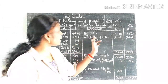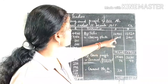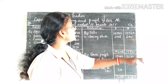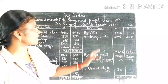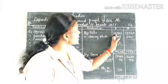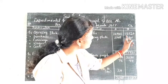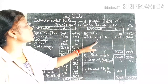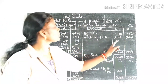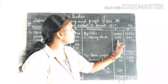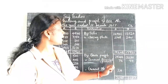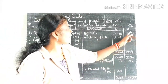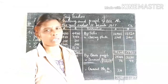On the credit side: Sales — Department A: 16,900 rupees, Department B: 13,520 rupees. Then closing stock: Department A: 2,748 rupees, Department B: 2,401 rupees.